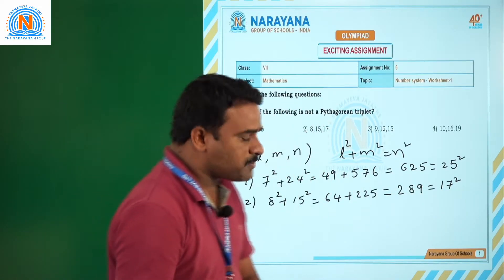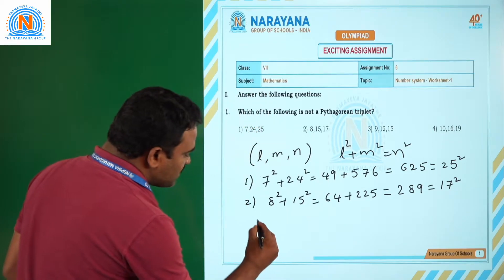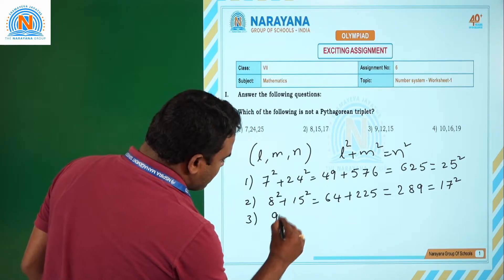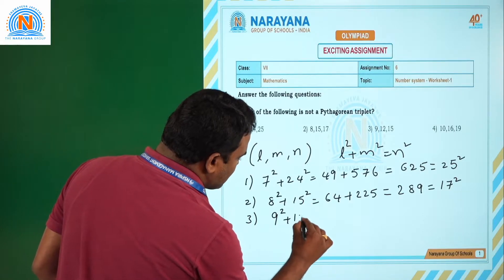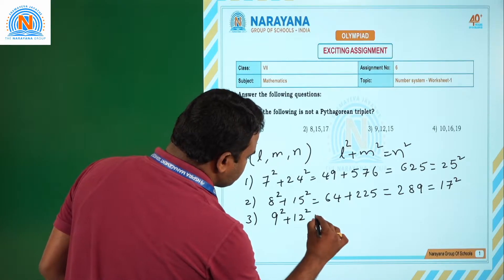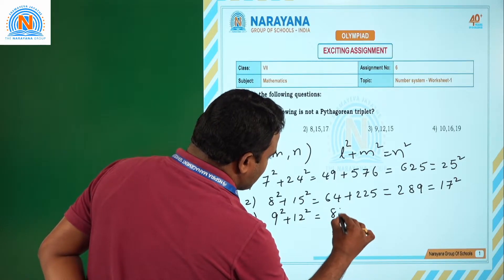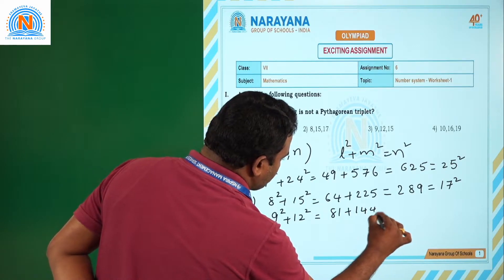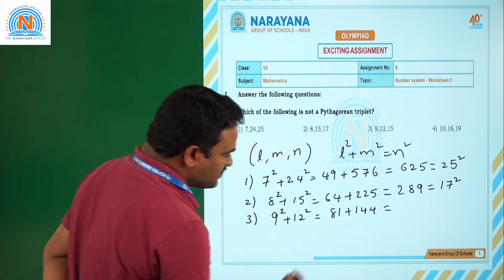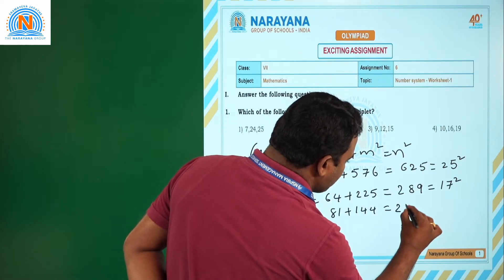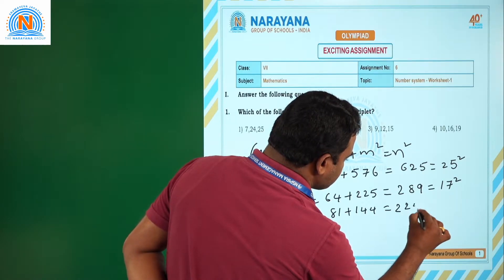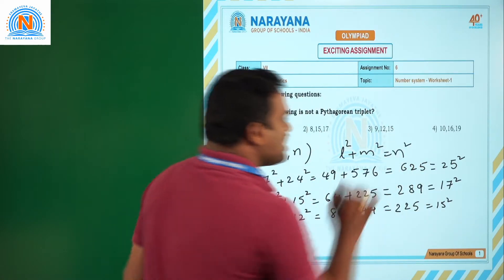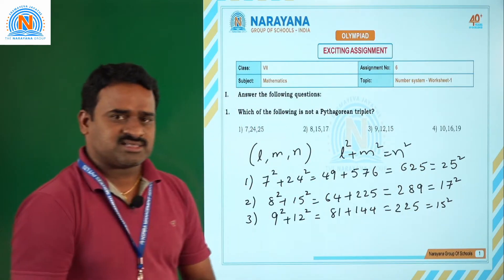Now option 3: 9, 12, 15. 9² + 12² gives us a result that is also a Pythagorean triplet.